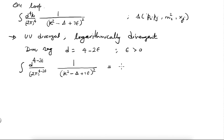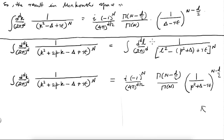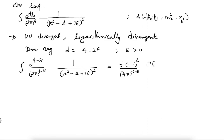In that formula, putting d = 4 − 2ε: we have a (−1)^N factor with N = 2. Then (4π)^(d/2) becomes (4π)^(2−ε). In the numerator you have Γ(N − d/2); d/2 is 2 − ε, so N − d/2 = 2 − (2 − ε) = ε. The minus signs cancel, leaving Γ(ε). In the denominator you have Γ(N) = Γ(2) = 1. And then you have 1 over (Δ − iε)^ε. All kinematic dependence is contained in Δ, and the remaining things depend on ε only.